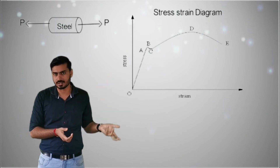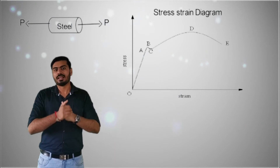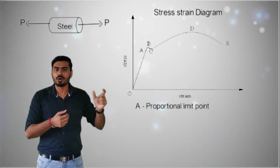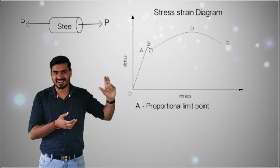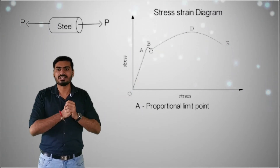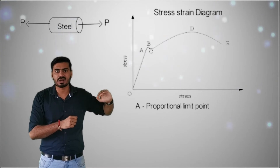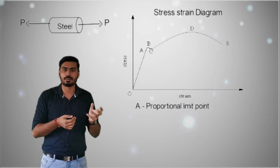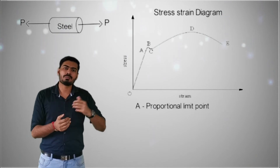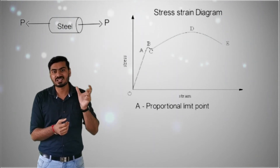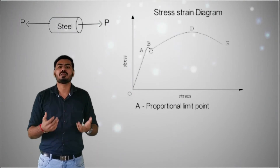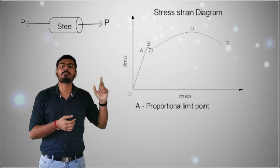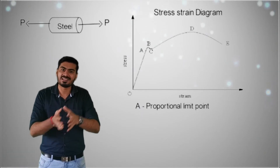If you further increase the loading, the strain value will increase, and from point A to point B you will not get the proportional straight line as shown in the diagram. From A to B there is a curvature, and due to this curvature Hook's Law becomes inapplicable or deviating in this zone. Although up to point B the material still exhibits elastic deformation only, it does not hold the proportionality of Hook's Law well within the A to B region.